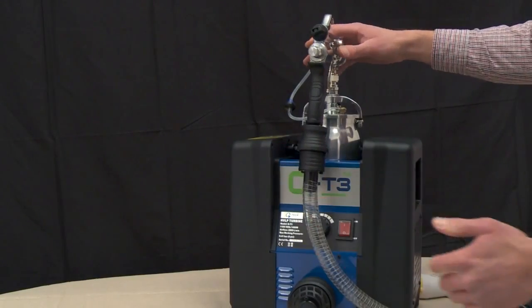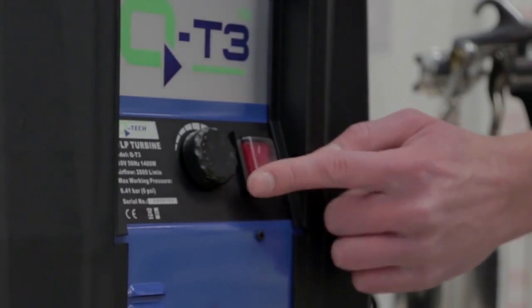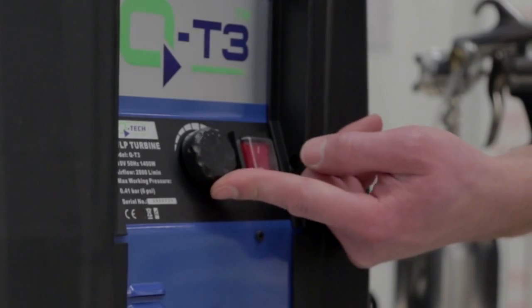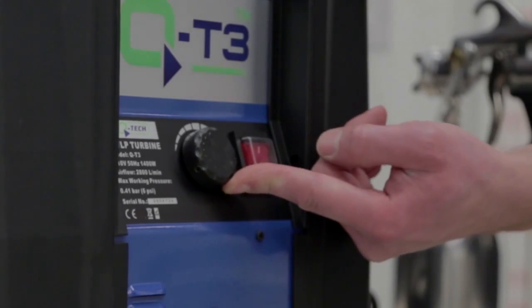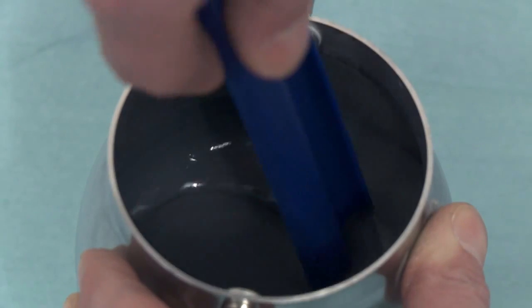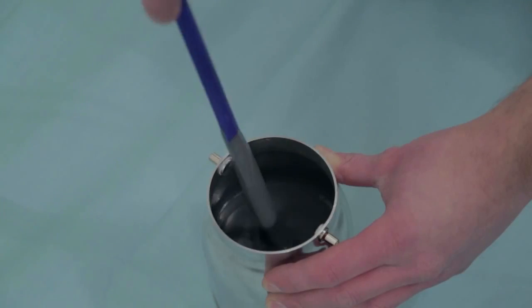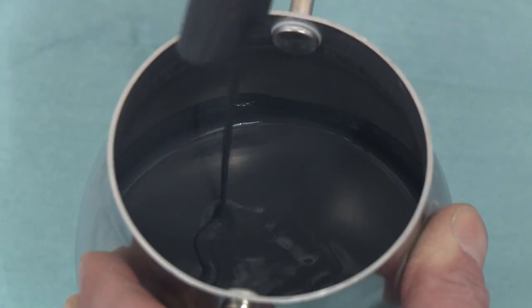With your spray gun and hose attached, the airflow adjustment knob on the QT3 turbine unit turned up to maximum unless the coating is very thin, and your coating in the pot and mixed correctly as detailed in the paint preparation section on this DVD, you're now ready to start spraying.